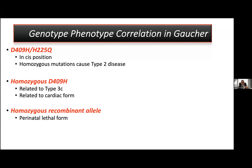Recombinant alleles are highly important in Gaucher disease, and we cannot detect them with classical sequencing. Therefore, we must perform specific genetic tests such as MLPA or specific oligonucleotide techniques in order to detect recombinant alleles in Gaucher disease.